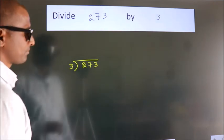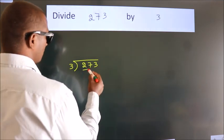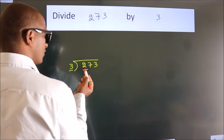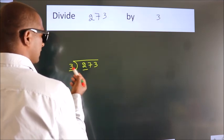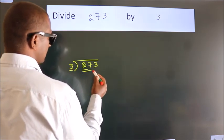Next. Here we have 2. Here 3. 2 smaller than 3. So, we should take 2 numbers. 27.